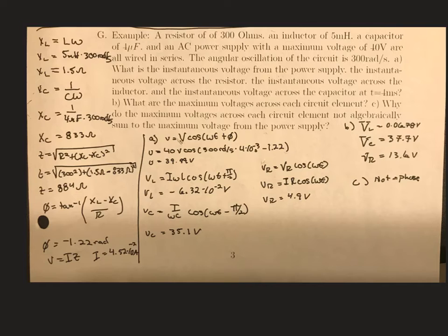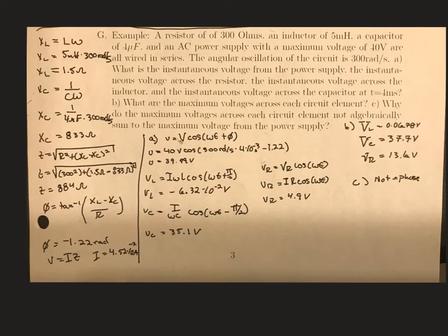I want to highlight that if you add the instantaneous voltages across the resistor, inductor, and capacitor together, you get the instantaneous voltage from the power supply. The instantaneous voltages across each circuit element add up to the instantaneous voltage from the power supply — that's an algebraic addition, so you can just add the values. I verified this before presenting it.